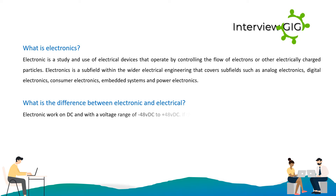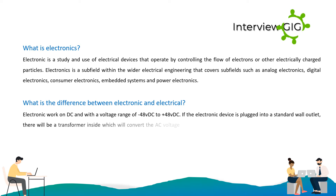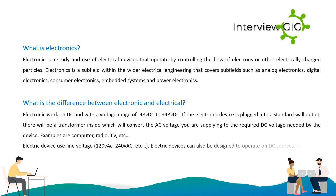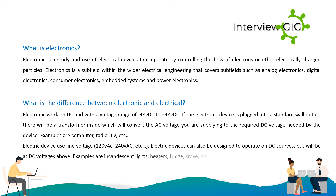The difference between electronic and electrical: electronic devices work on DC with a voltage range of -48 VDC to +48 VDC. If an electronic device is plugged into a standard wall outlet, there will be a transformer inside which converts the AC voltage to the required DC voltage needed by the device. Examples are computers, radios, etc. Electric devices use line voltage such as 120 VAC or 240 VAC.